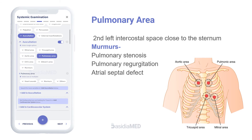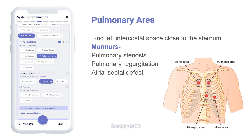The pulmonary area corresponds to the second left intercostal space, close to the sternum. Murmurs noted here are suggestive of pulmonary stenosis, pulmonary regurgitation, and atrial septal defect.